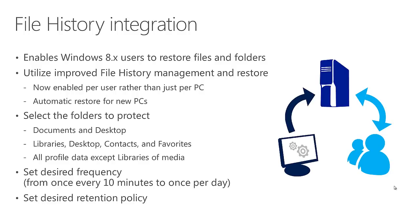You can select which folders to protect — generally the documents folder, the desktop, defined libraries, and favorites — giving you rich user data protected centrally on the server. You can also set the frequency of file history collection, as often as once every 10 minutes or just once per day. You can also set the retention policy, keeping data indefinitely until space runs out, or refining it to use less disk space for file history.